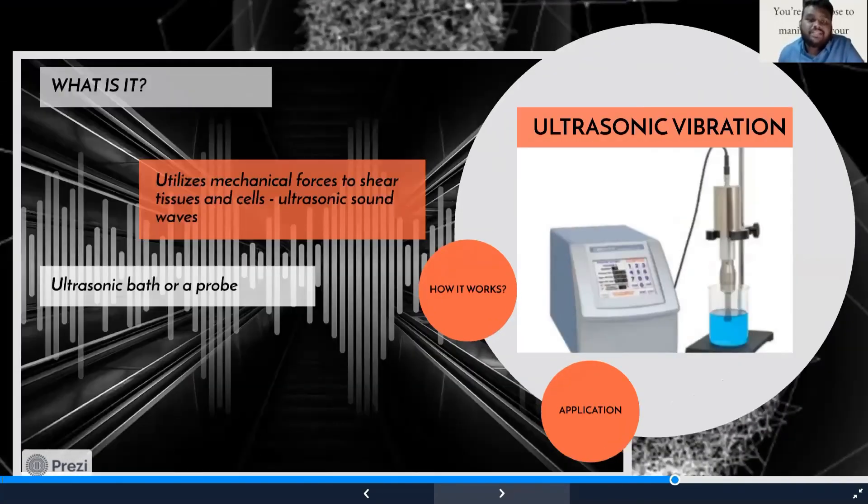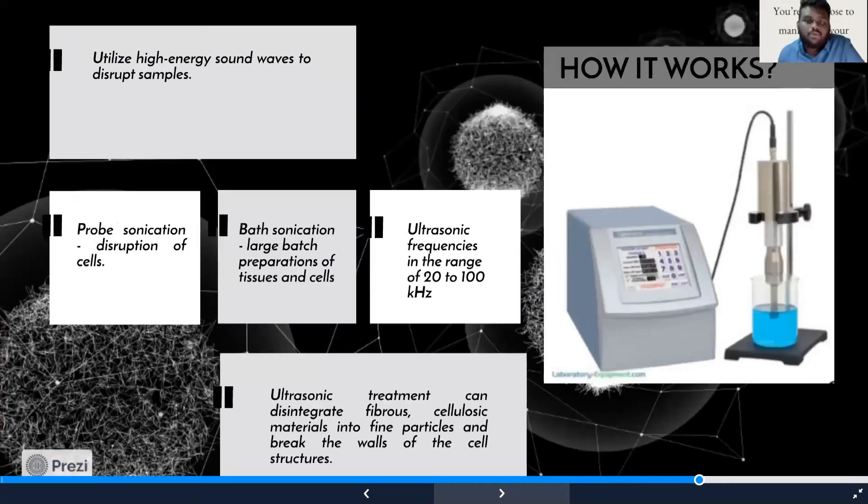Ultrasonic vibration utilizes mechanical forces to shear tissues and cells, where these forces take the form of ultrasonic sound waves. This can be done using either an ultrasonic bath or probe. Both bath and probe sonicators utilize high energy sound waves in the range of 20 to 100 kilohertz to disrupt the sample. Probe sonication is used for disruption of cells, while bath sonication is useful for large batch preparation of tissues and cells. Ultrasonic treatment can disintegrate fibrocellulolytic materials into fine particles and break cell walls and structures.